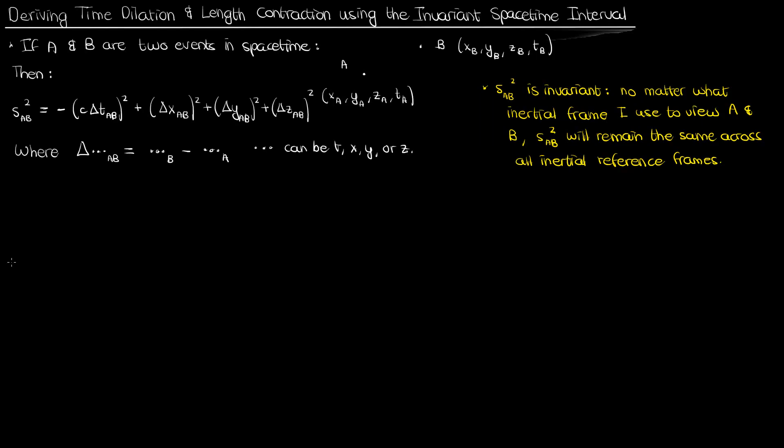The individual components — like delta t, delta x, etc. — might change between different inertial reference frames, but the overall s squared will remain the same. We discussed this in detail in the last video, so go see that if you need a refresher. Now let's move on to deriving the time dilation and length contraction equations using the invariance of our spacetime interval.